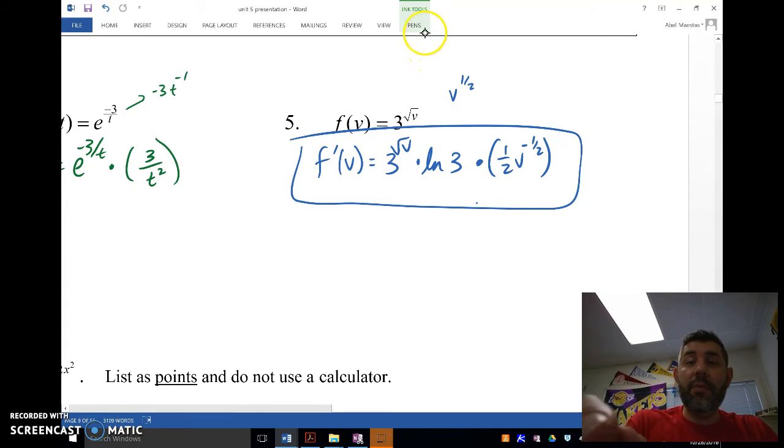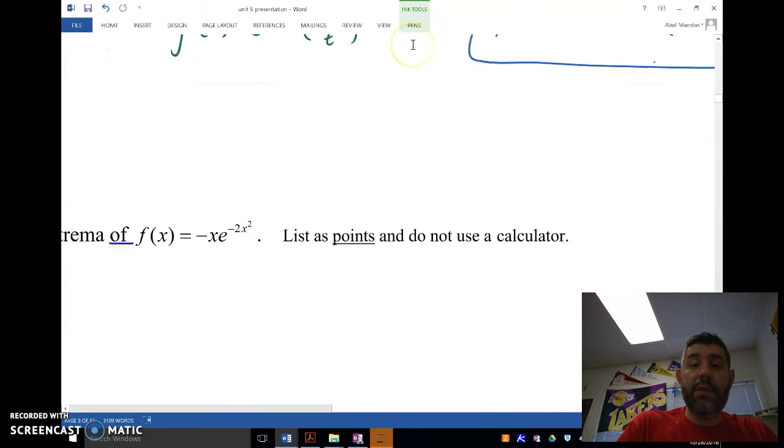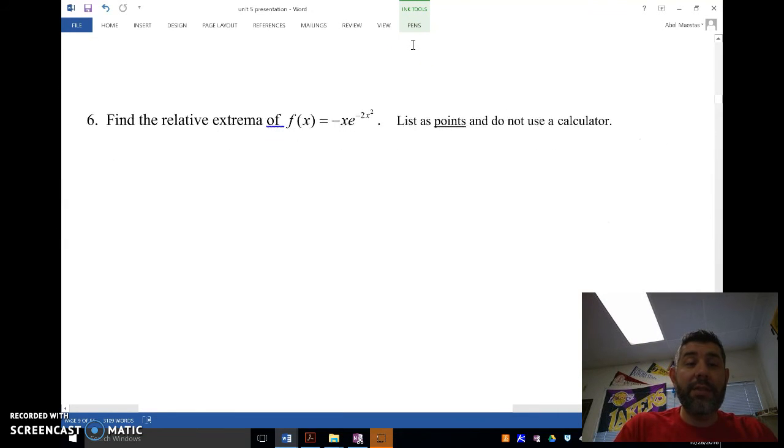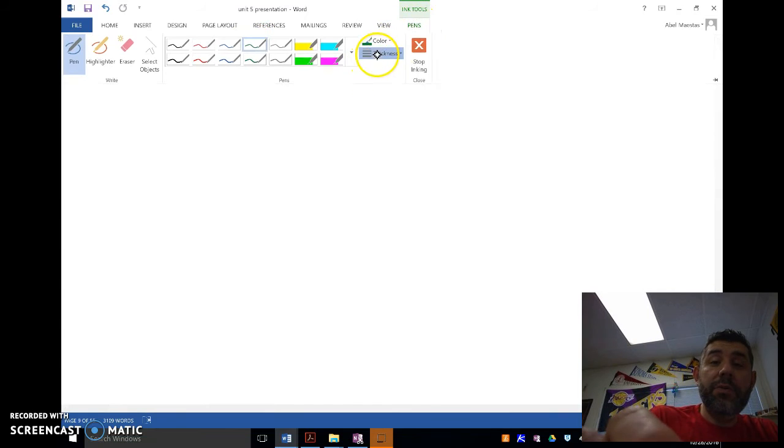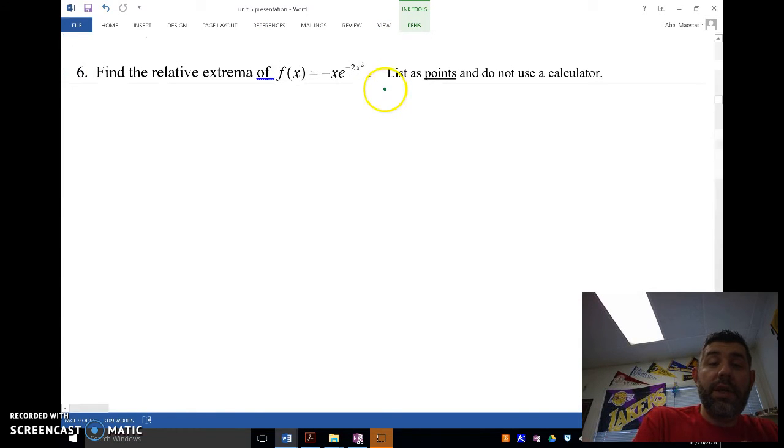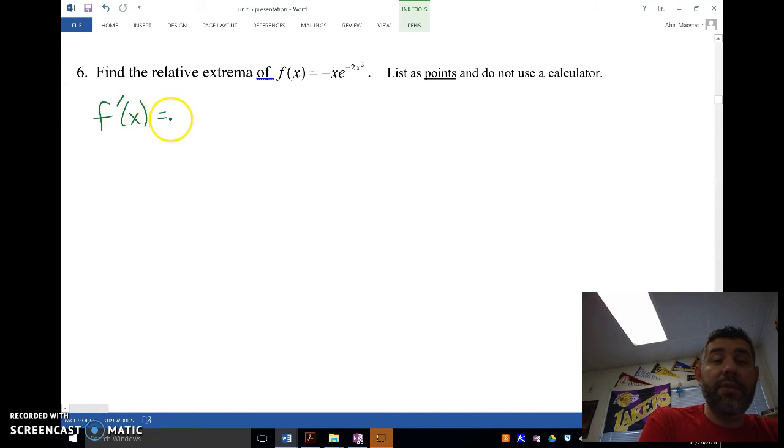So let me show you one more example where we would use this. This is just adding in some other stuff we've already done in the past. Find the relative extrema of f(x) equals negative x times e to the negative 2x squared. So how do we do that? How do we find a relative extrema? Well, we need to take the derivative.